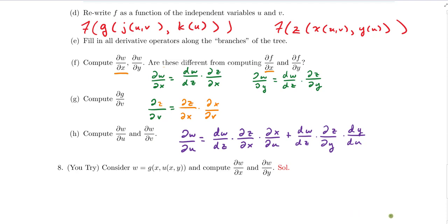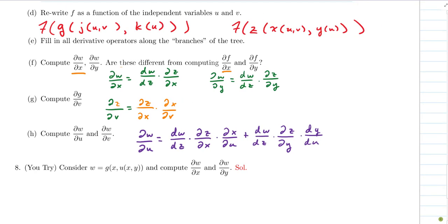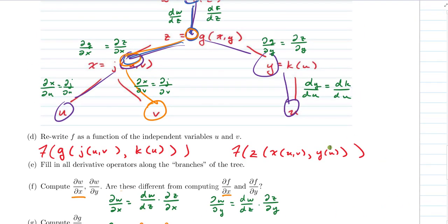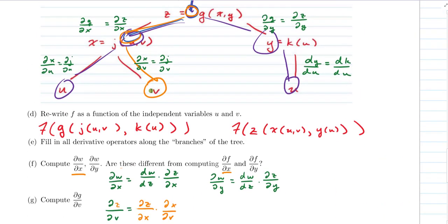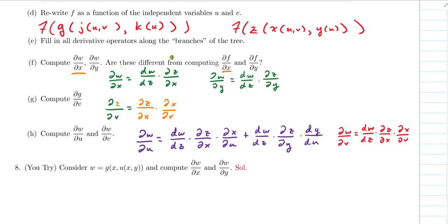And then finally, we could compute ∂w/∂v. And I'm almost out of room here. Sorry about that. ∂w/∂v, luckily, it's a little shorter, will be derivative of w with respect to z, dw/dz, times ∂z/∂x times ∂x/∂v. And that's the only route that can get me down to the variable v there from the dependent value w.